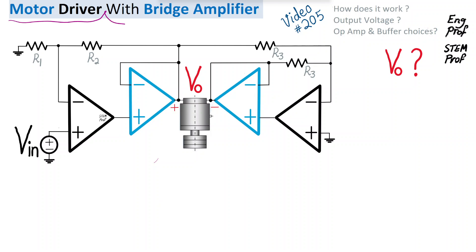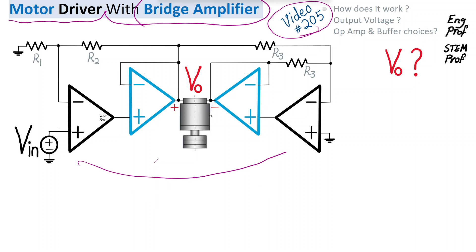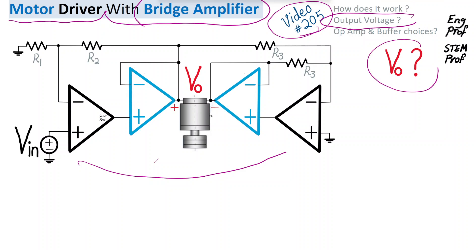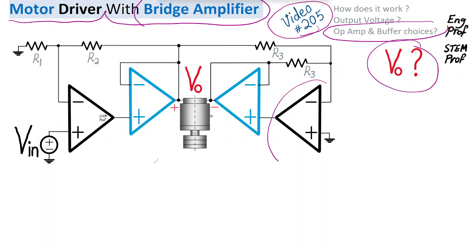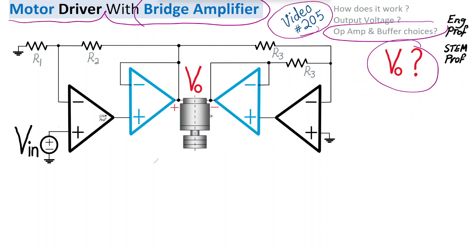A motor driver circuit designed with a bridge amplifier is explained in this video. This is the 205th video in the analog circuit playlist. We would like to see how the circuit works, what is the output voltage Vout as a function of the input voltage applied to drive the motor, and what are the proper choices of circuit components including the op-amp and the high current buffer.